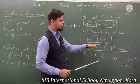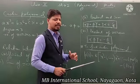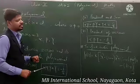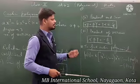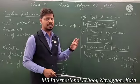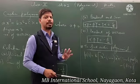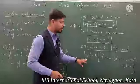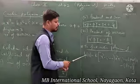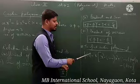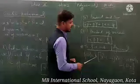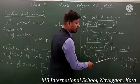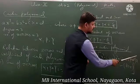Now to find a cubic polynomial — agar cubic polynomial find karni hai when its sum of zeros, sum and product of zeros, and only product of zeros are given to you, then you have to find a cubic polynomial by this formula: p(x) = k × [x³ − (sum of zeros)·x² + (sum and product of zeros)·x − (product of zeros)].